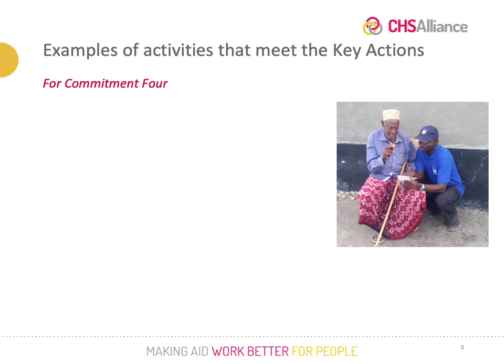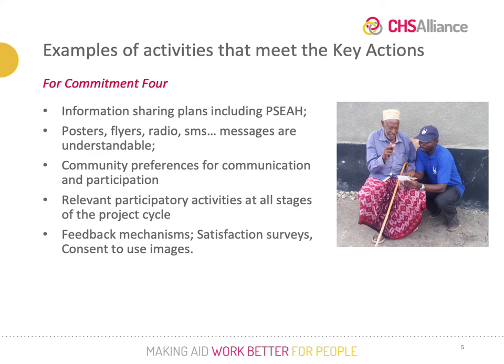Thinking about your role as a CHS focal point supporting the implementation of the CHS, what types of things might your field teams be doing if they were fulfilling these indicators under Commitment 4? Examples could include having information sharing plans as part of the programme activities, making sure that PSEAH is contextualised in these, and making sure information materials such as posters and flyers are easily understood and respectful.